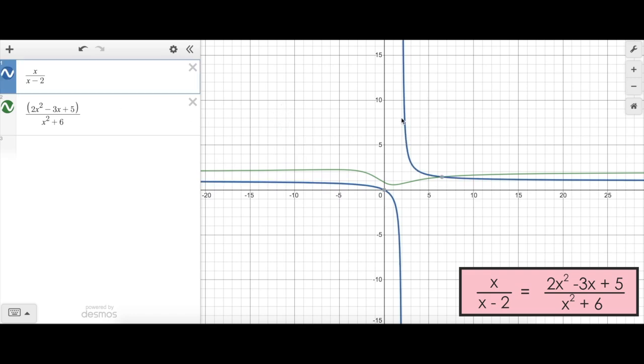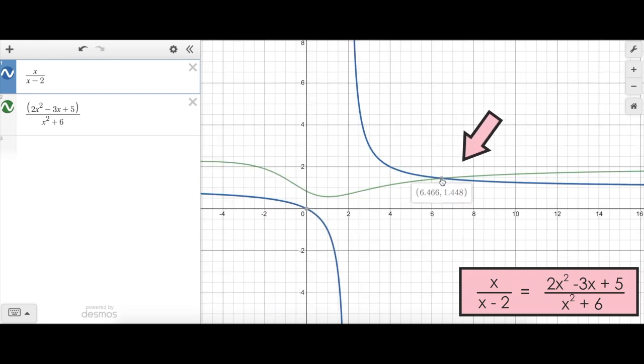If you click one of the functions all the points of interest pop up immediately. So you can see here this is the x and y intercept of the blue function. But what I'm more interested in here is this point right here: 6.466 comma 1.448.